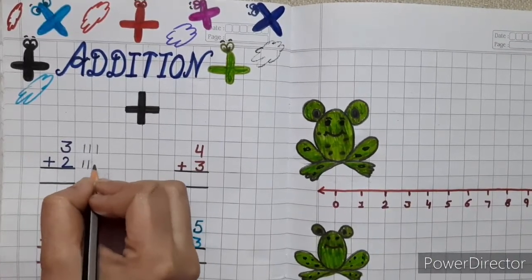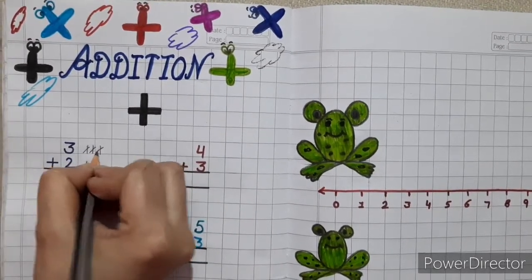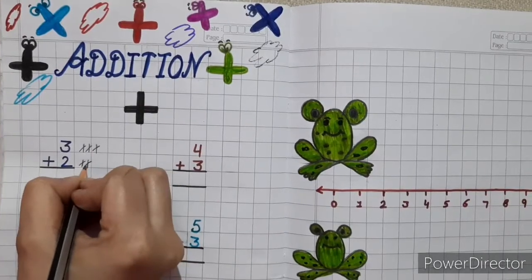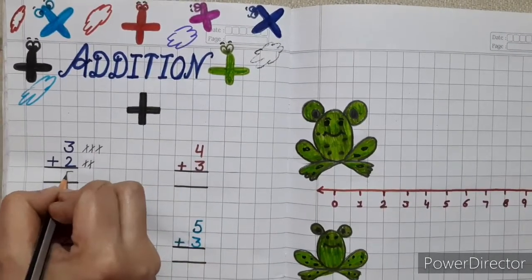Now count all the lines. 1, 2, 3, 4, 5. So answer is 5. So write 5 here.